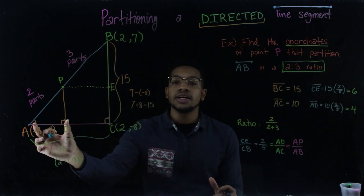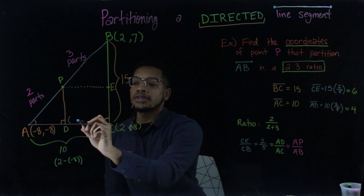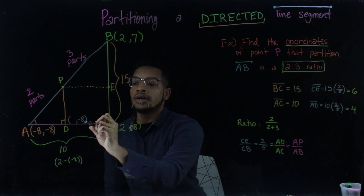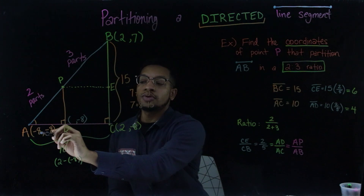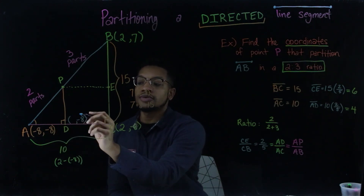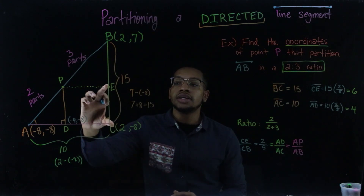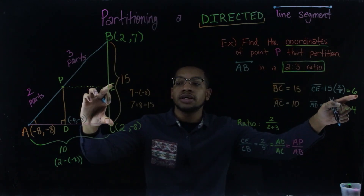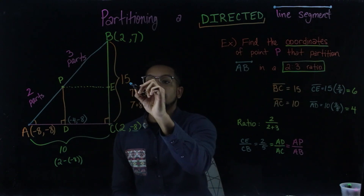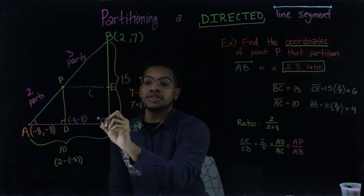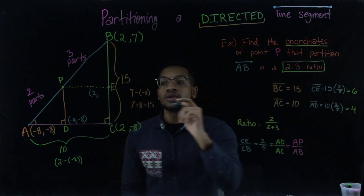Now that I know the length of AD, I can figure out the x-coordinate of point D. Since that distance AD is 4, I can say my x-coordinate plus 4 equals the x-coordinate of point D: negative 8 plus 4 is negative 4. I can do the same thing with the y-coordinates. If the length of CE is 6, I take my y-coordinate and add 6: the x-coordinate of E stays 2, and the y-coordinate is negative 8 plus 6, which gives negative 2.